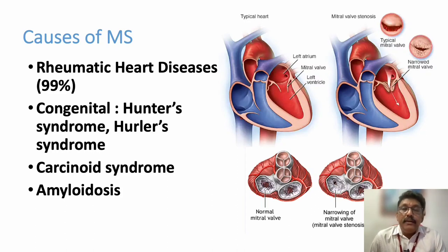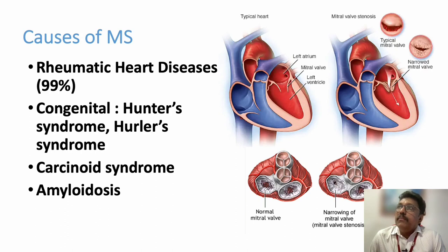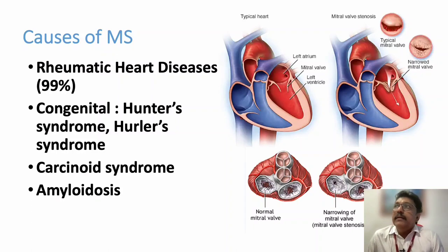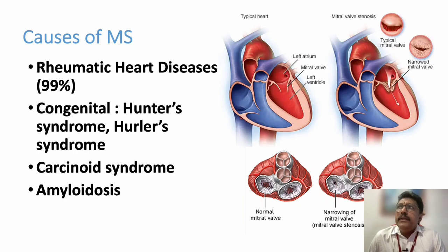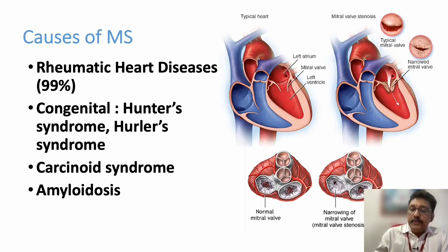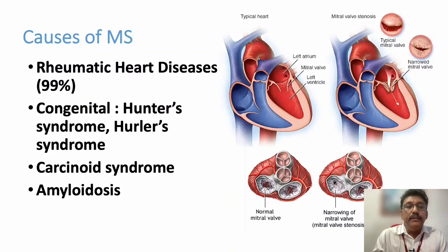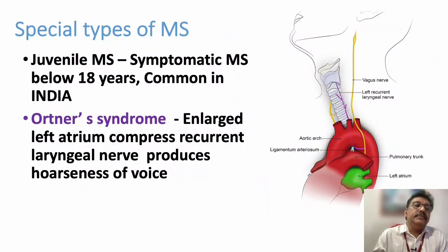Whenever we get a case of mitral stenosis, the most common etiological factor will be rheumatic heart disease — and even the second, third, and fourth causes are also rheumatic heart disease. Very rarely only do we get other types of cases. So the etiological factor for mitral stenosis is almost always rheumatic heart disease.